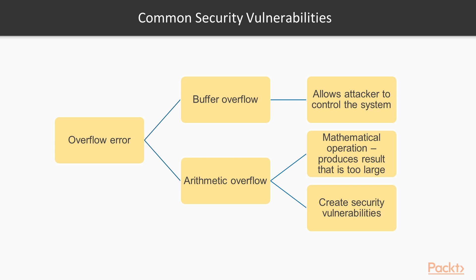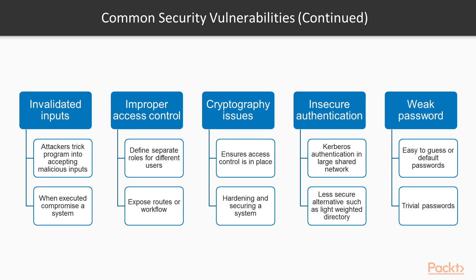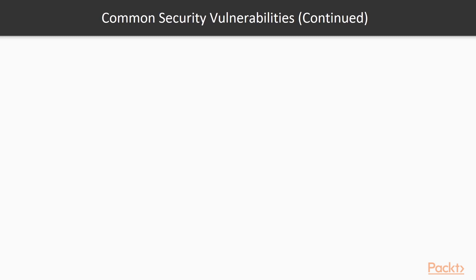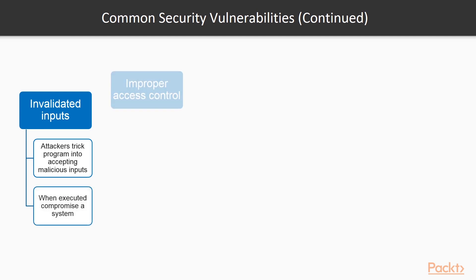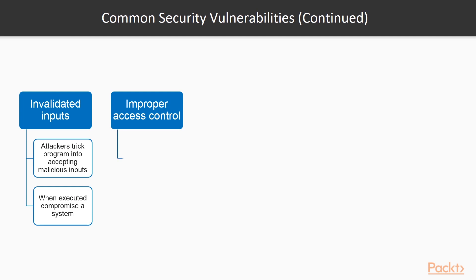Integer overflows can create security vulnerabilities if not properly handled. The second vulnerability is invalidated or improperly validated input — invalidated input can cause major vulnerabilities where attackers trick a program into accepting malicious input such as code, data, or system commands, which when executed can compromise a system. Next is improper access control — modern applications should define separate roles for their classes of users, such as regular users and those with special privileges like super users or administrators. When an application fails to do this correctly, it can expose routes or workflows.